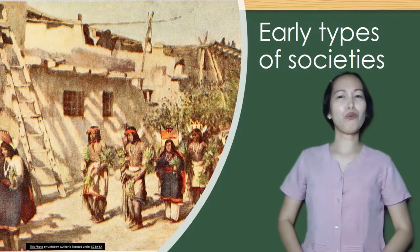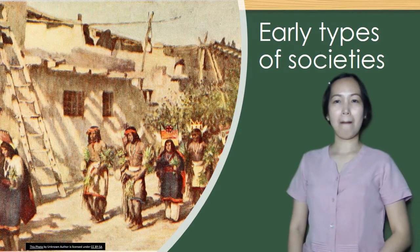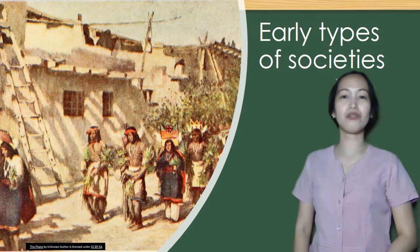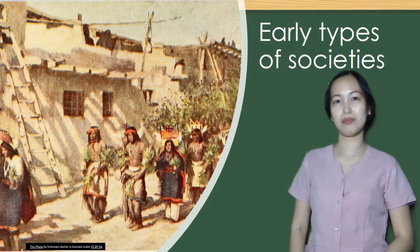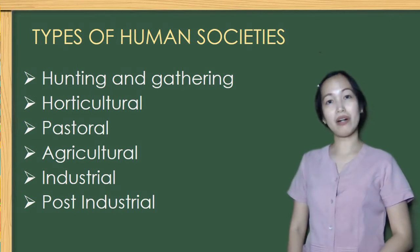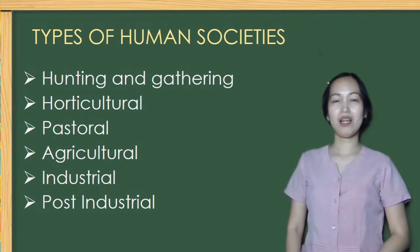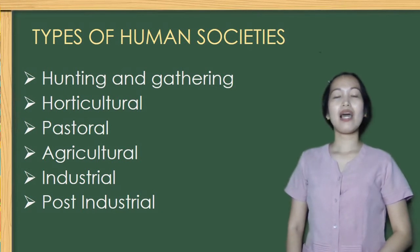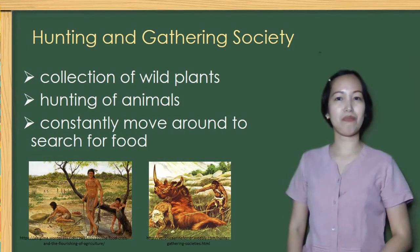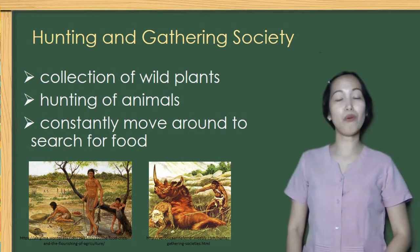Have you ever wondered what society was like before your lifetime? During the course of human history, people have organized themselves into various types of societies depending upon their level of technology and their related methods of subsistence. As early civilization arose, six types of human societies also developed: hunting and gathering, horticultural, pastoral, agricultural, industrial, and post-industrial. The first human society is hunting and gathering society — their food production involves collection of wild plants, hunting of animals, and they constantly move around to search for food.